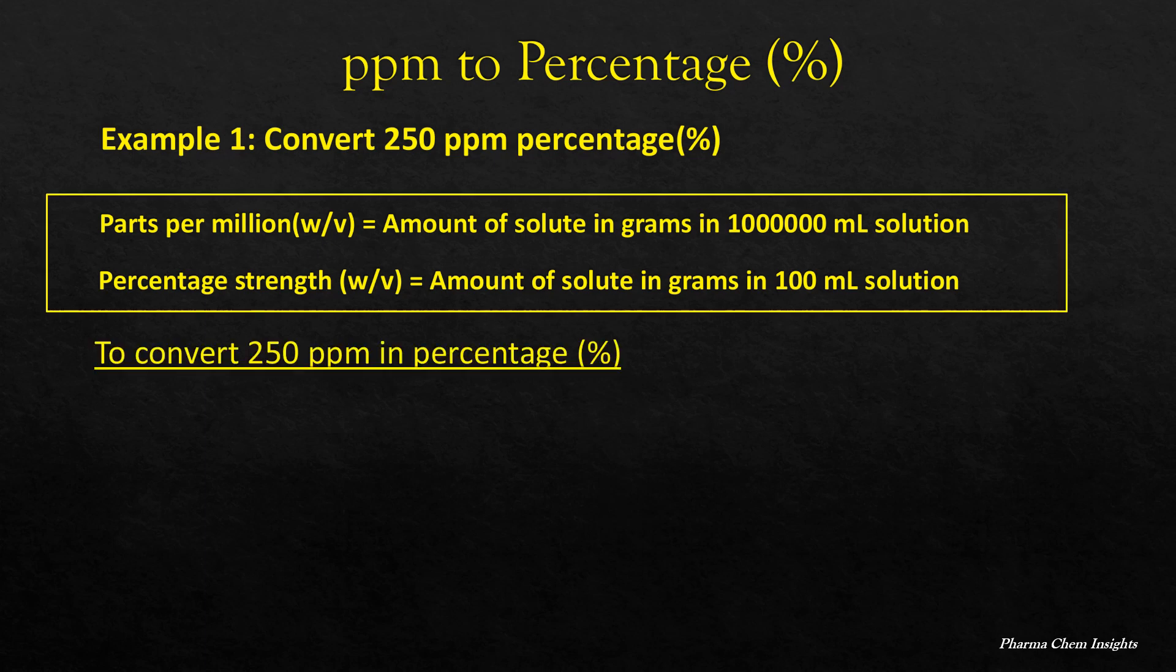To convert 250 PPM into percentage, for PPM that is 250 grams divided by 1,000,000 ml is equal to x grams that we have to calculate, divided by 100 ml.